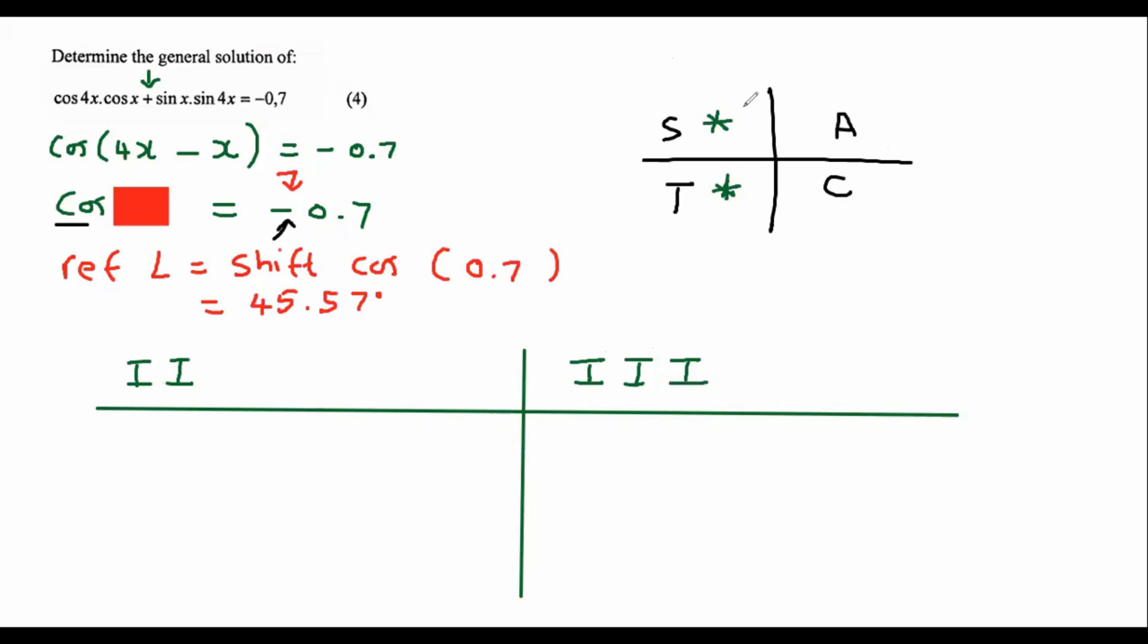Now we are ready to see what is under the red box. Let's have a look. Ah, it's 3x. So now what we do is we put 3x over here and we put 3x over here. Then in quadrant 2, we say 180 minus. In quadrant 3, we say 180 plus. Because that's what we always say.